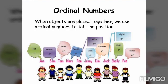In the first place we have Anna, the second is Sam, the third is Tom, the fourth is Mary, the fifth is Ron, the sixth is Jenny, the seventh is Kim, the eighth is Jack, the ninth is Shelly, and the last one in tenth place is Pat.